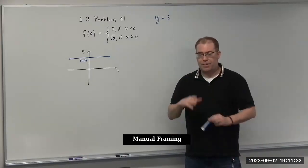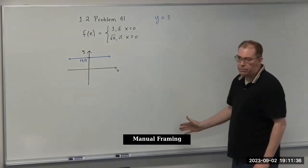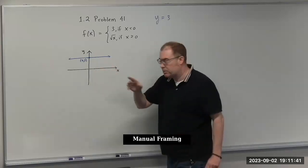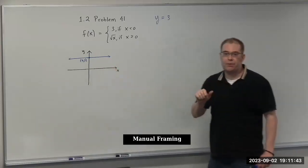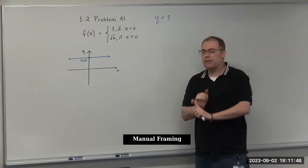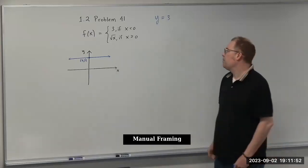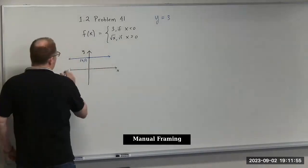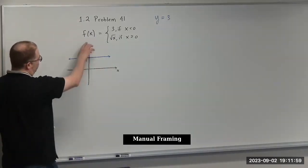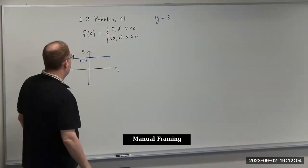Whenever y equals a constant, the slope is zero and the line is horizontal. By contrast, x equals a constant gives a vertical line — for example, x equals three is a vertical line at x-intercept (3, 0). Vertical lines have undefined slope; horizontal lines always have slope of zero.